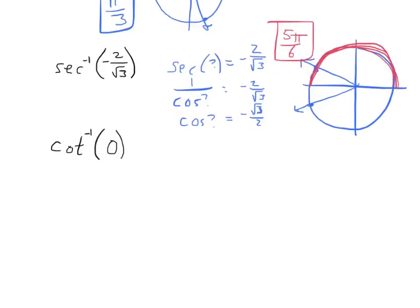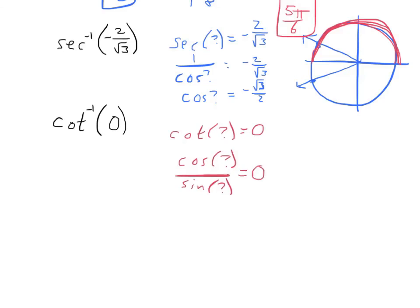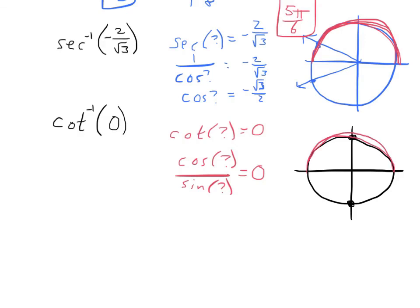For the last problem, the inverse cotangent of 0 means the cotangent of some angle is 0. That means cosine over sine equals 0, which only happens when the numerator — the cosine — is 0. So I need to find where the x-value is 0. On the unit circle, a 0 x-value happens at the top and bottom. But principal values for cotangent are in the first and second quadrants, so the answer is π/2.